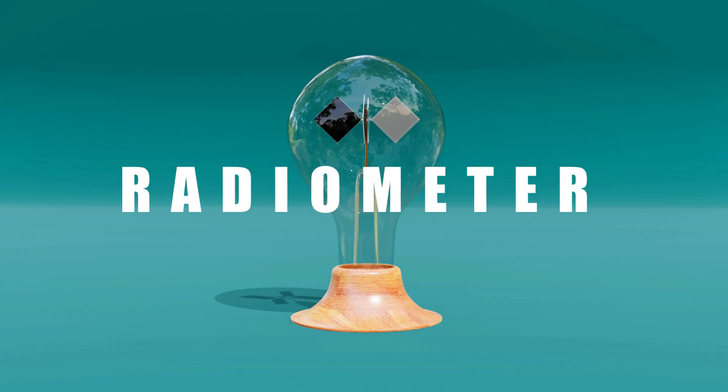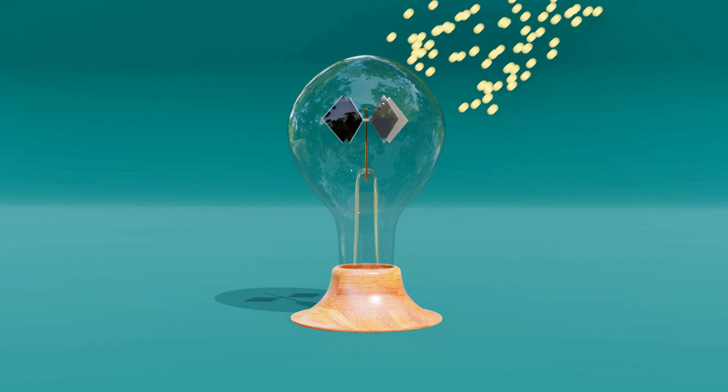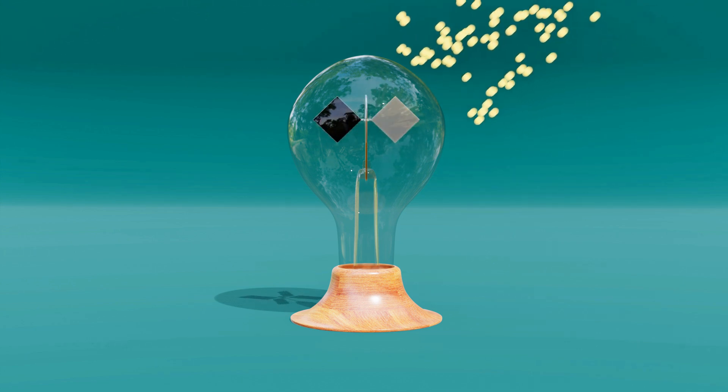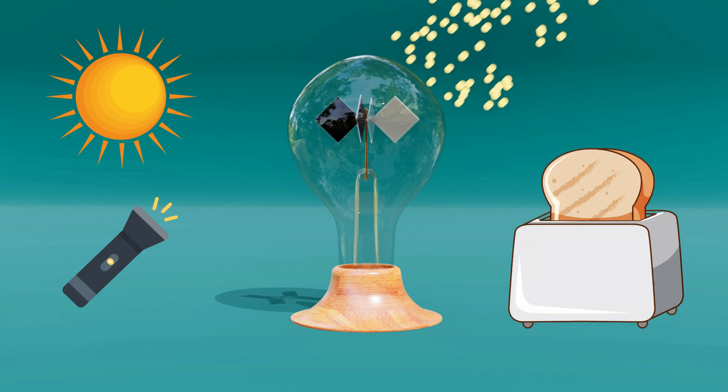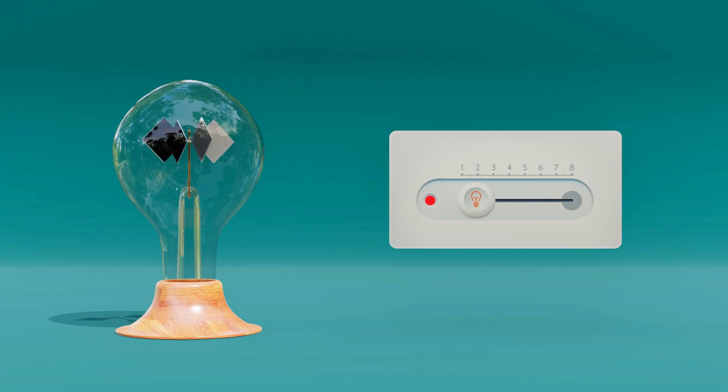This device is called a radiometer. It begins to spin almost instantly when placed near a light source—that could be sunlight, a flashlight, or even the heat from a toaster. The speed of rotation increases with the intensity of radiation, making it a simple way to measure energy.